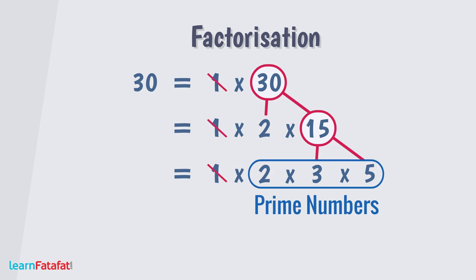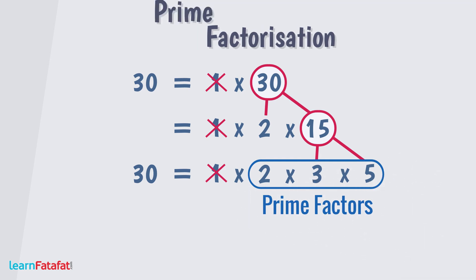If we remove 1 then the value will not be affected, it remains same. However, we get the product in the form of prime factors. So just now we have written 30 as the product of prime factors. Such a factorization of a number in the form of product of its prime factors is called prime factorization.